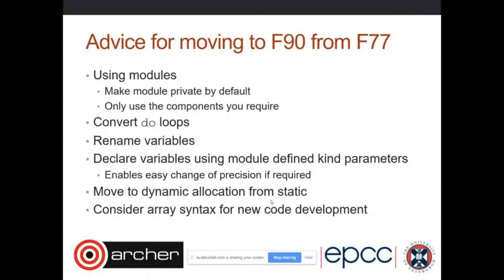When creating a module, the cleanest approach is to make it private by default — you can specify this at the module level — and then expose only what you really need. Also convert do loops away from computed go-to style; using `do`/`end do` syntax looks cleaner from a programming perspective. Dynamic allocation instead of static allocation can make code much more portable in many scenarios.